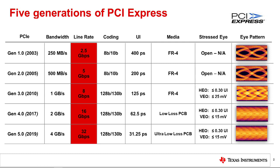To leverage the benefits of a higher data rate, PCIe links since Gen 3 have utilized a more efficient data encoding to reduce overhead. The speed growth is so quick that systems are leveraging lower loss PCB material in order to support Gen 4 and Gen 5 signal requirements.